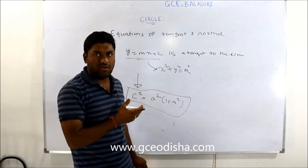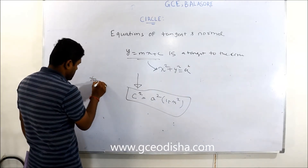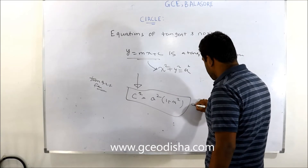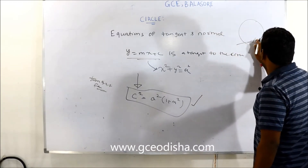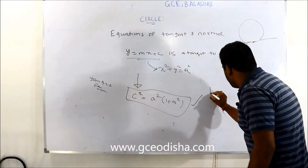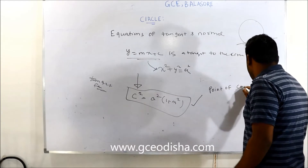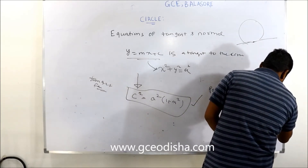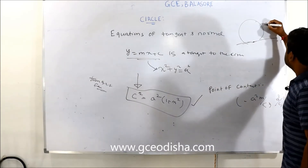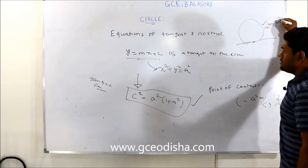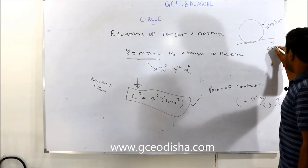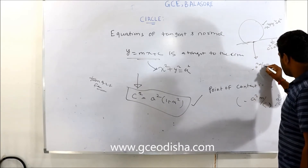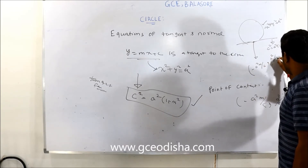The tangent formula and the point of contact: when the circle is x² + y² = a² and the tangent is y = mx + c with condition c² = a²(1 + m²), the point of contact is (-a²m/c, a²/c). So the point where the tangent touches the circle is (-a²m/c, a²/c).